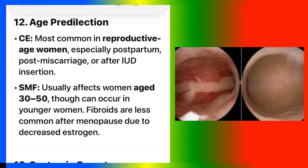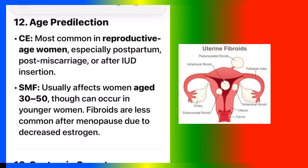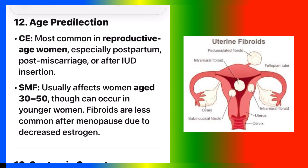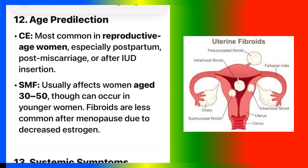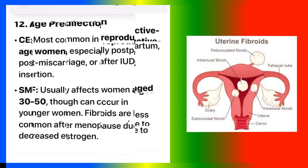Number twelve: age predilection. CE is most common in reproductive-age women, especially postpartum, post-miscarriage, or after IUD insertion. SMF usually affects women aged 30 to 50, though it can occur in younger women. Fibroids are less common after menopause due to decreased estrogen.